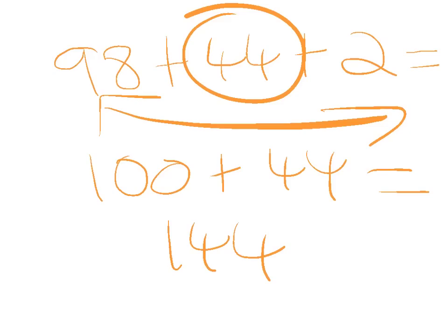And then another example here is 98 plus 44 plus 2. I can see very quickly that 98 and 2 make a tidy number so they're compatible. So 100 plus 44 equals 144.